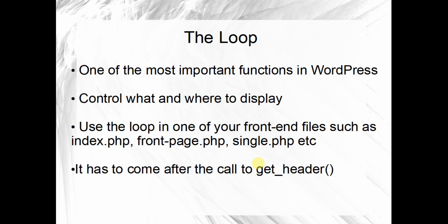You use the loop in one of your front-end files such as index.php, front-page.php, or single.php. You can put it in any front-end page you want to display, but one important thing: it has to come after the call to get_header. If you put get_header inside the loop you will just repeat the header again and again. The loop loops through all your blog posts and displays them accordingly.